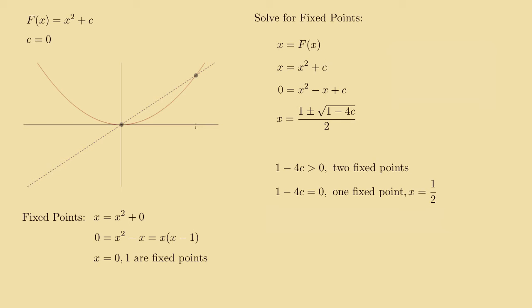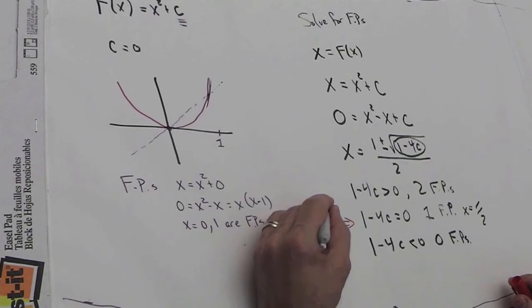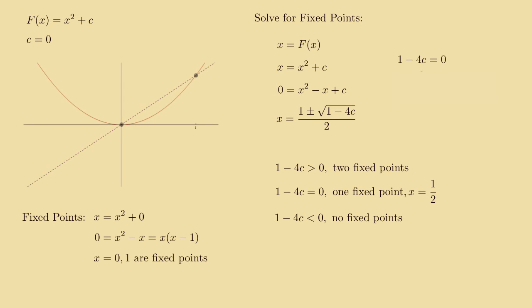And if 1 - 4c is less than 0, 0 fixed points. So it turns out that the bifurcation occurs right here. This is the bifurcation. It occurs right where the number of fixed points changes from 2 to 1 and then to 0. This is the bifurcation. And of course, if 1 - 4c is equal to 0, that implies that c equals 1/4 or 0.25, which is what we saw on the computer experiment.